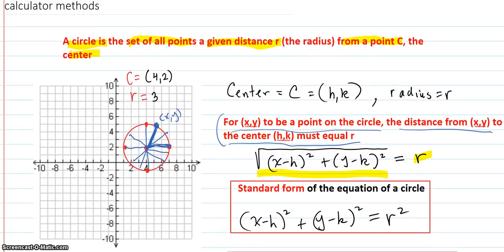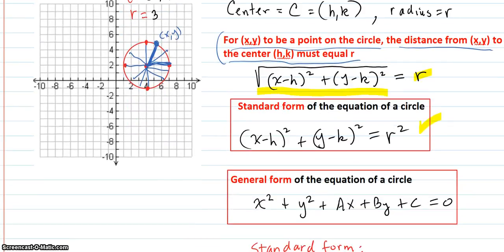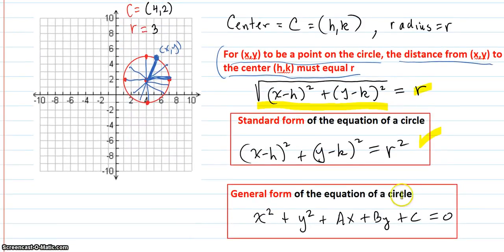So all we have to do is square both sides, and we get the standard form of the equation of a circle. The general form of an equation of a circle is this one. So there's only two forms, the general and the standard.